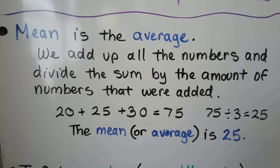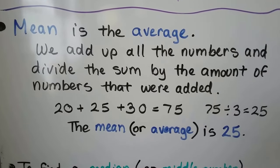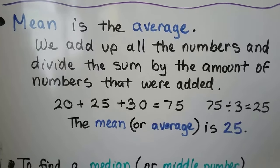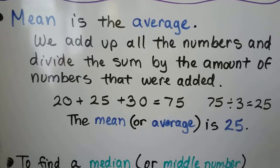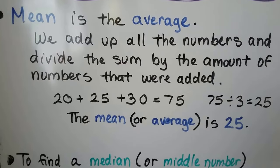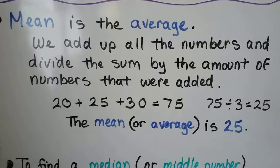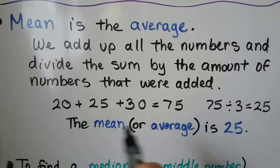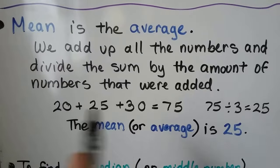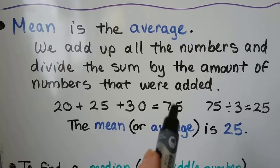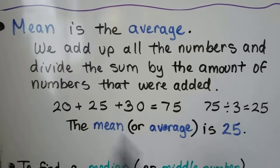Mean is the average. We add up all the numbers and divide the sum by the amount of numbers that were added. So if we have three numbers, 20, 25, and 30, we add them up. We get 75. Because there were three numbers, we divide the 75 by 3. We get 25, so we know the mean or average is 25. It's pretty easy. You add up the numbers and divide that sum by however many numbers you added.